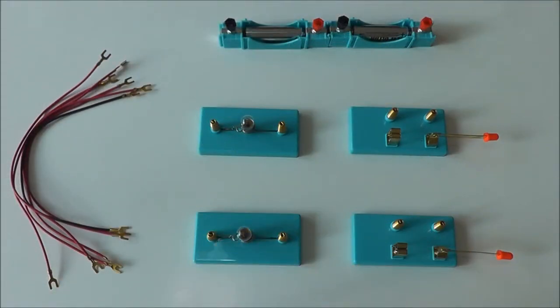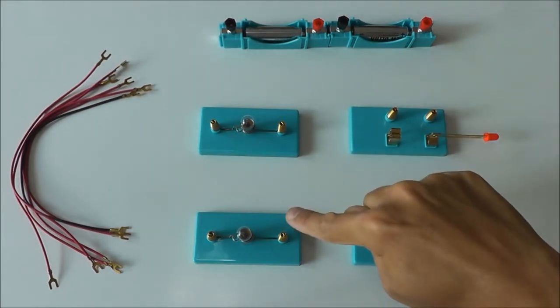In this lesson we're going to learn how to connect parallel circuits. The apparatus we require includes two battery holders with batteries connected in series, two switches, two light bulb holders with bulbs installed, and six wires.